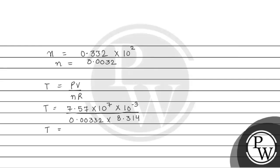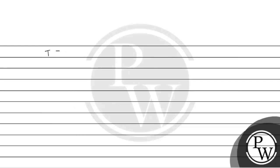Solving this, we get 7.57 × 10^4 divided by 0.02760248. From this, the temperature will be equal to 274.25 Kelvin.